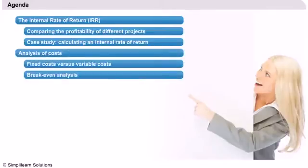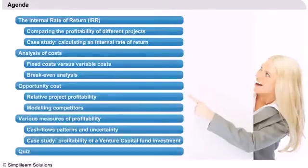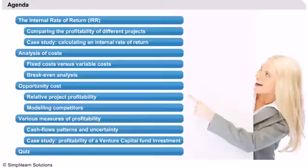One of the influencing factors of profitability is costs. Costs impact profit directly, and for this reason a good understanding of cost structure can help to increase profitability. We will go over the various types of costs and discuss how cost analysis can be used to optimize production through the concept of break-even analysis.